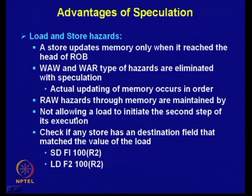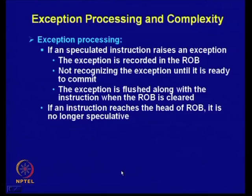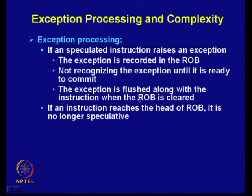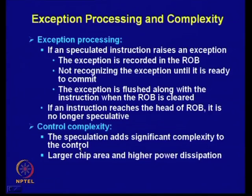Exception processing: if a speculated instruction raises an exception, the exception is recorded in the ROB and not recognized until the instruction is ready to commit — when it reaches the head of the ROB. The exception is flushed along with the instruction when the ROB is cleared. If an instruction reaches the head of the ROB, it is no longer speculative. However, all these features add significant complexity to the control unit.